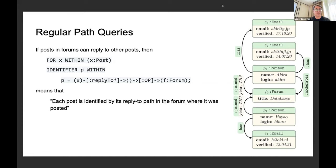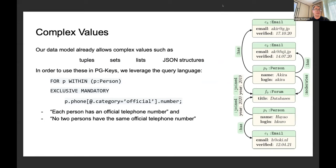Finally, we looked at what happens if you have complex values sitting in the properties. Our data model allows complex values such as tuples, sets, lists, and some structures. In order to use these in PG-Keys, we just leverage the functionality of the underlying query language. For example, if we have some complex data sitting underneath phone number properties of people, we can access an attribute phone number of the category and from that select the number. This is exclusive and mandatory to the person p. This is just saying that each person has an official telephone number and no two people can have the same official number. This is just leveraging the query language.